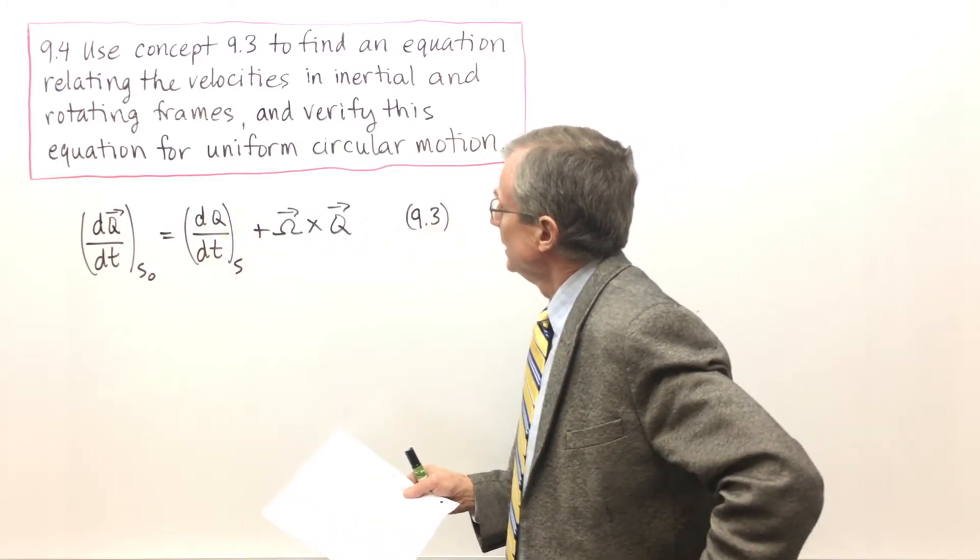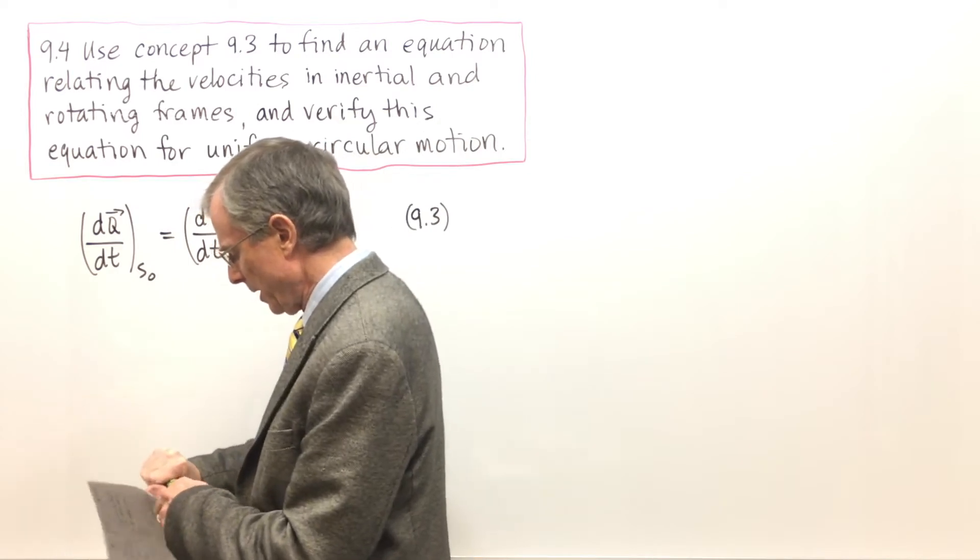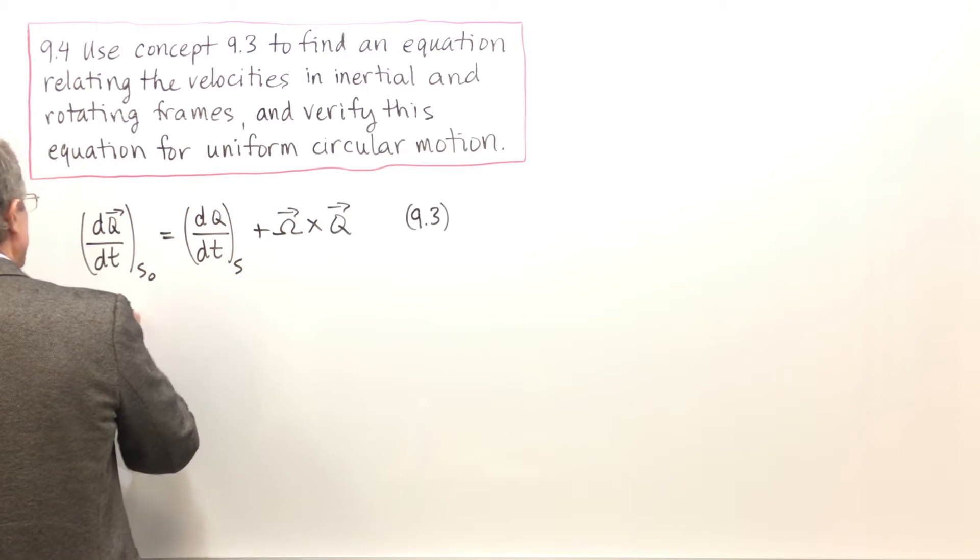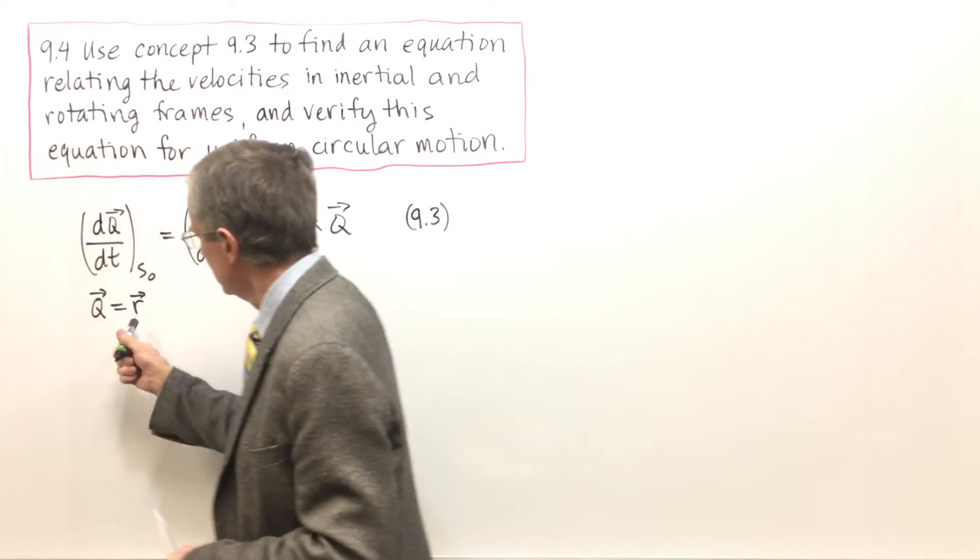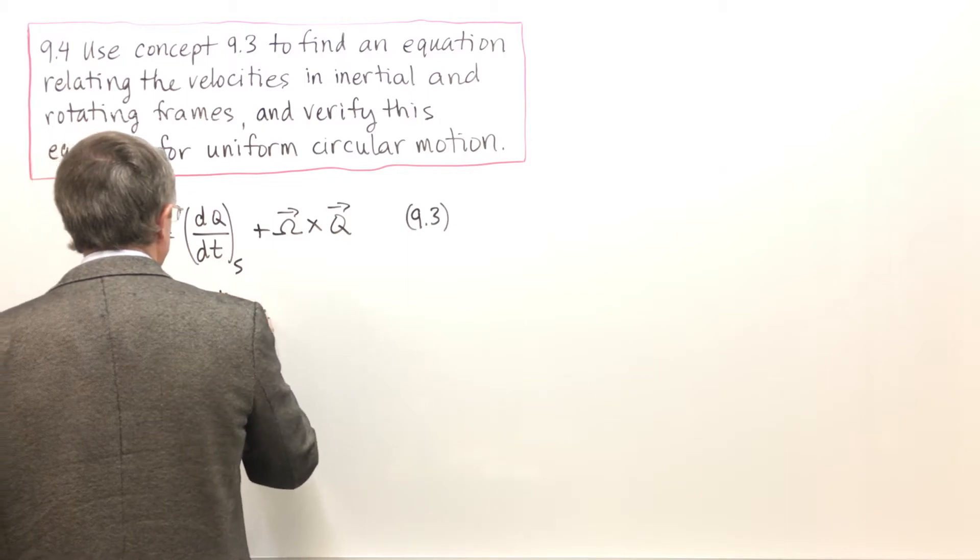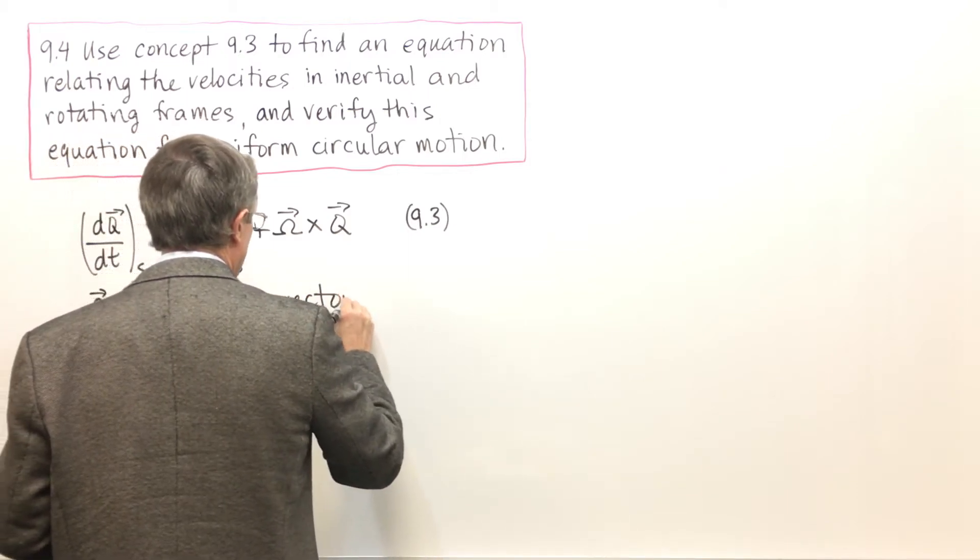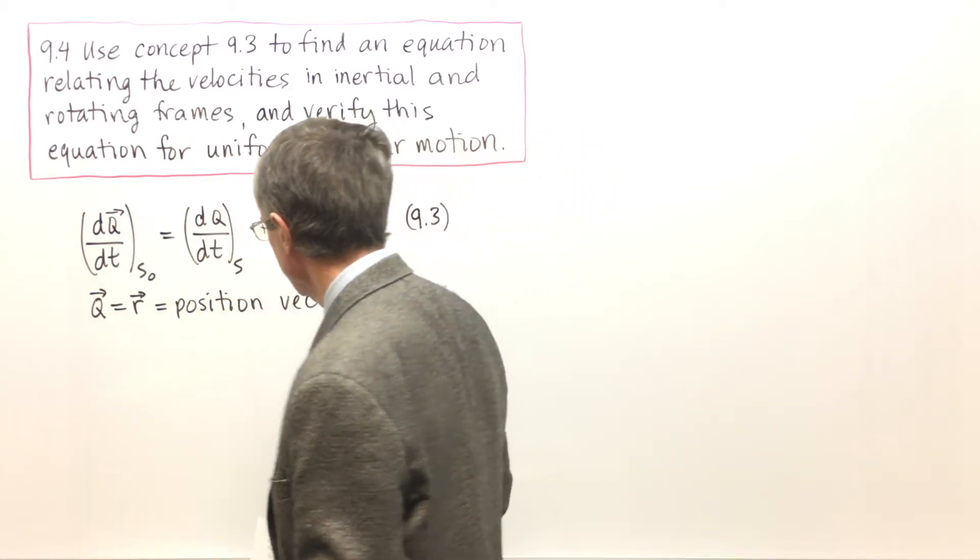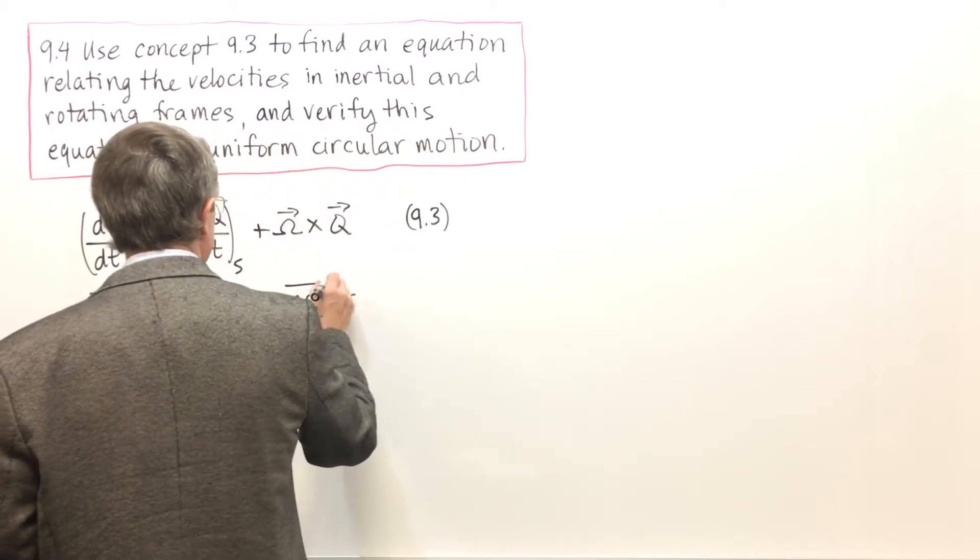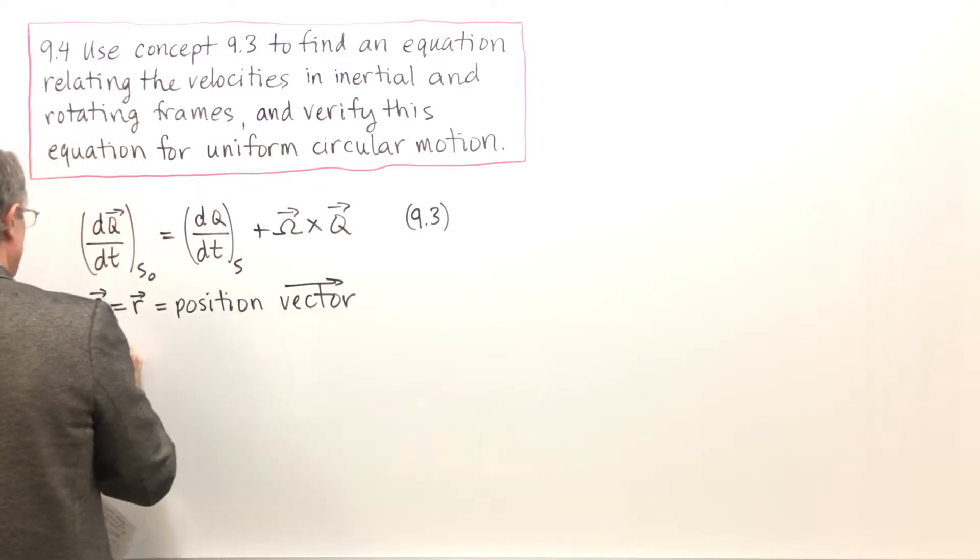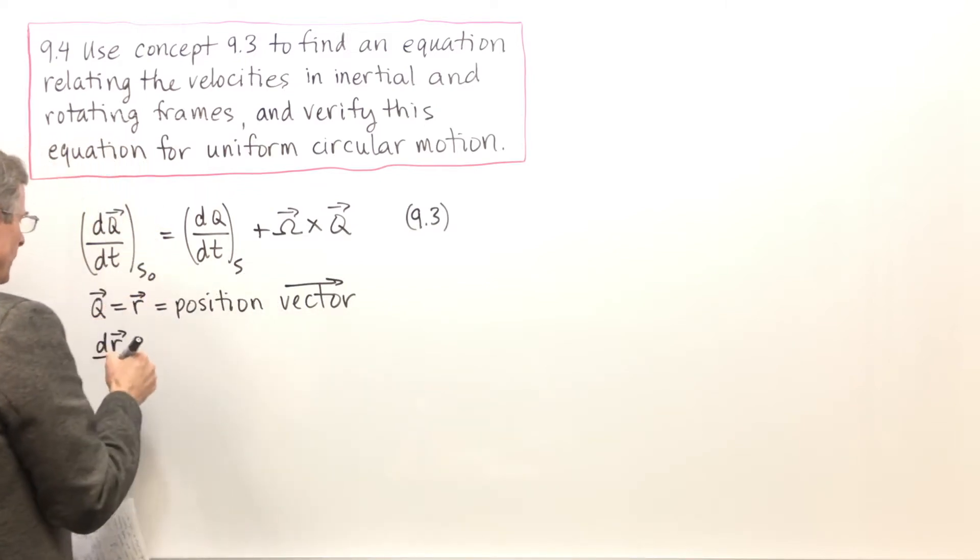Well if R is the position then we can just set Q equal to R. So R is that position vector, points from the origin to whatever you're looking at, and we're going to substitute that into here.